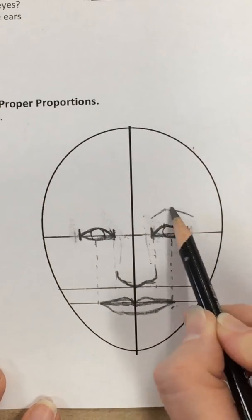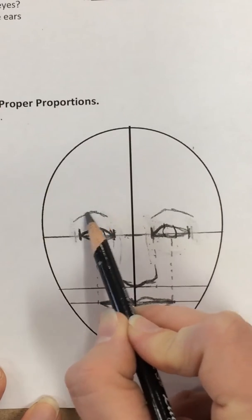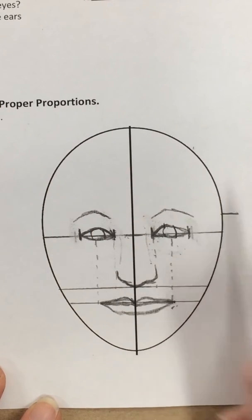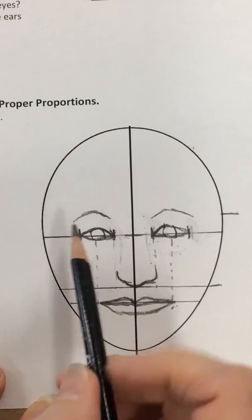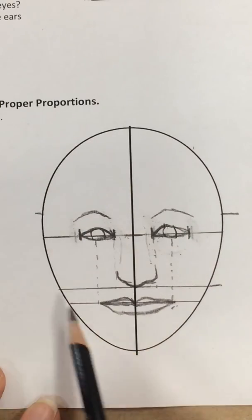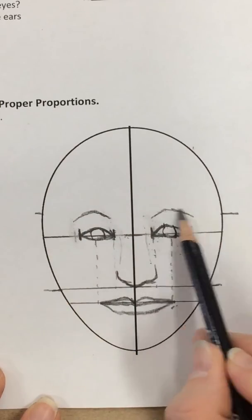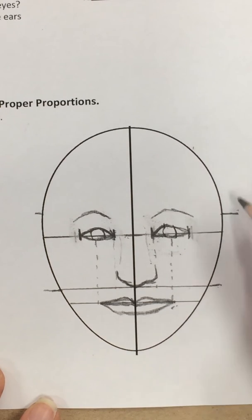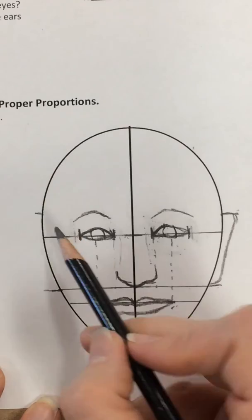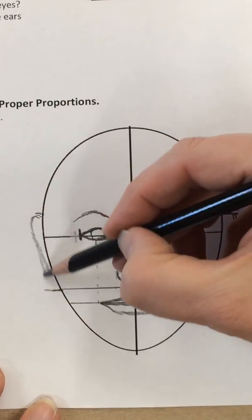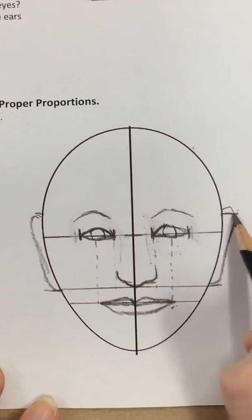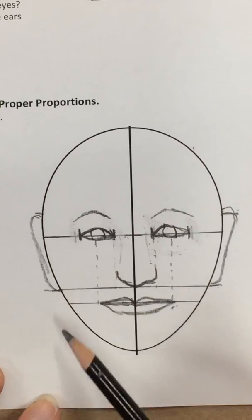The eyebrows would be located somewhere around here. The ears are located on both sides and line up with your eyebrow and the bottom of your nose. You would draw them in according to those proportions. Remember this portrait right now is basically without hair.